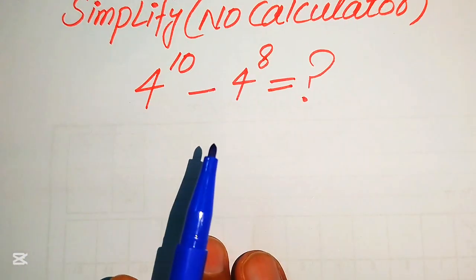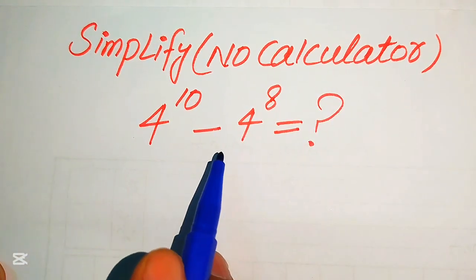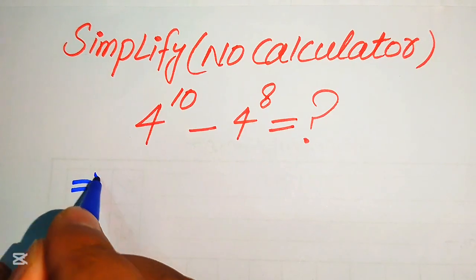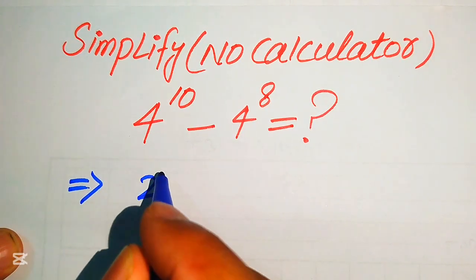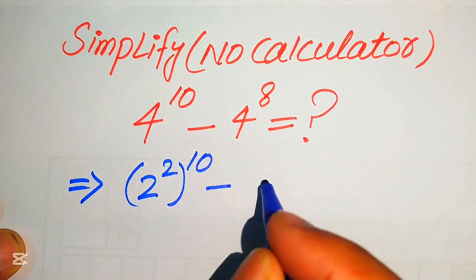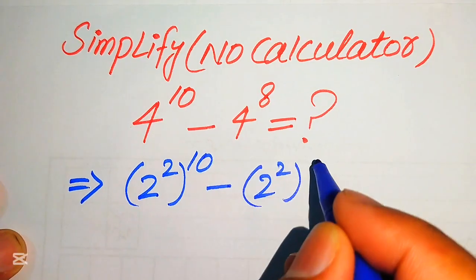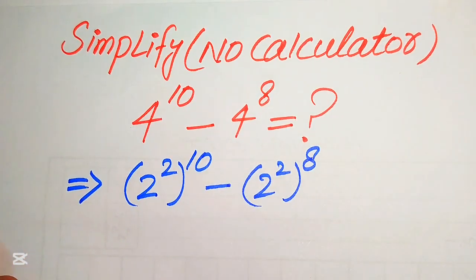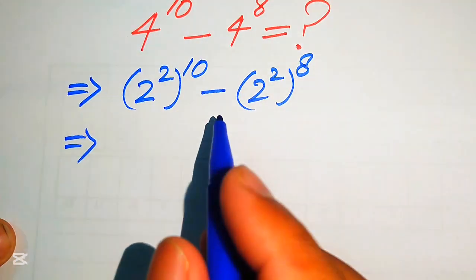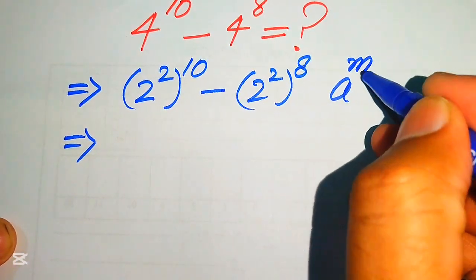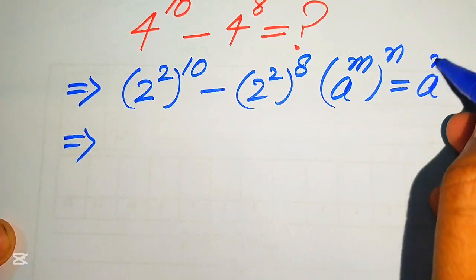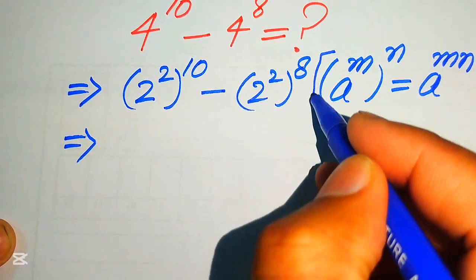The very first step is to focus on the bases of these two terms. You can see the bases are both 4. So we rewrite 4 as 2 squared, giving us 2 squared to the whole power of 10, minus 2 squared to the whole power of 8.